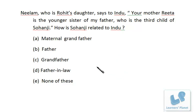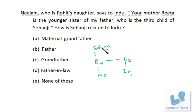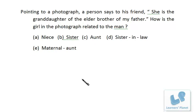Next: Neelam, who is Rohit's daughter, says to Indu, 'Your mother Rita is the younger sister of my father.' That means Rohit and Rita are in the same generation — Rohit is male. The question asks who is the third child of Sohanji, and the father is Sohanji's third child. So there are two generations between Sohanji and Indu, making Sohanji Indu's maternal grandfather.